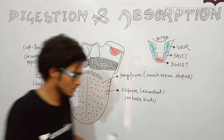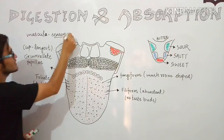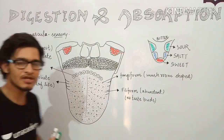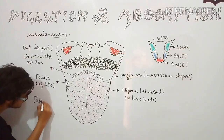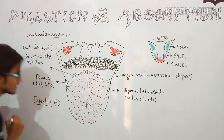Tongue is a very important musculosensory organ, and it is covered with the help of a thick squamous stratified epithelium layer. The tongue has different kinds of papillae present on its surface. Papillae are some outgrowths or projections on the surface of the tongue, and these are of four different types.